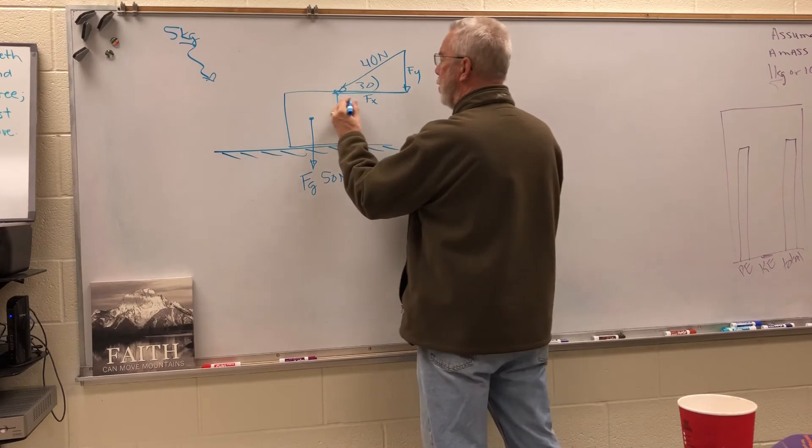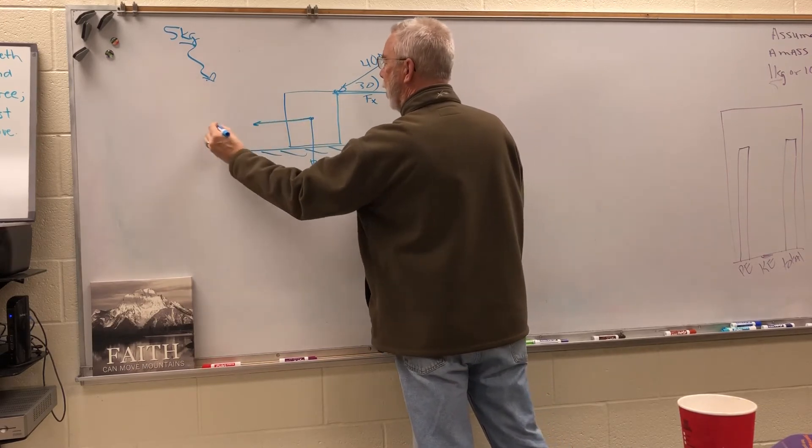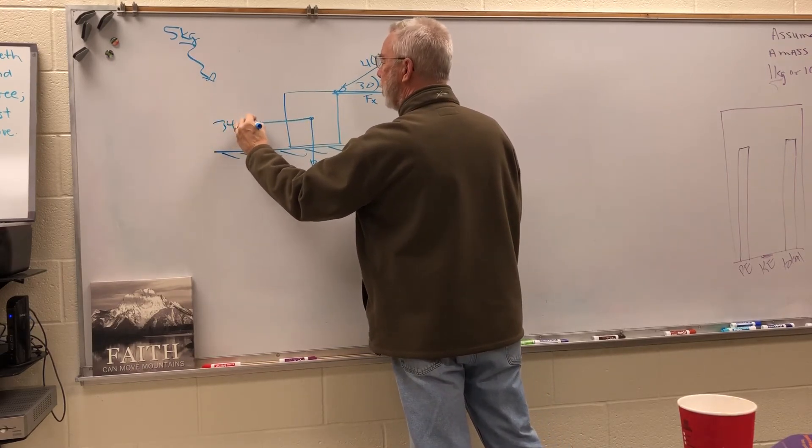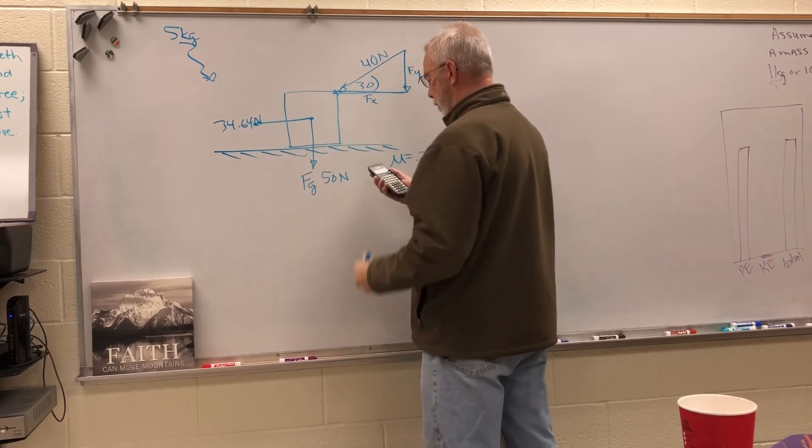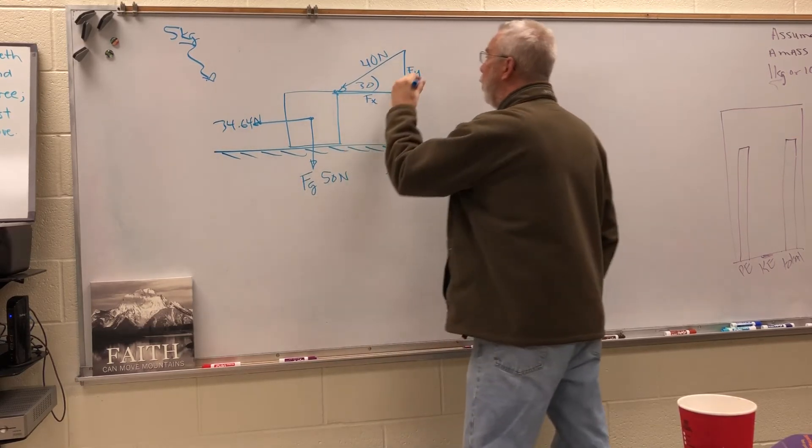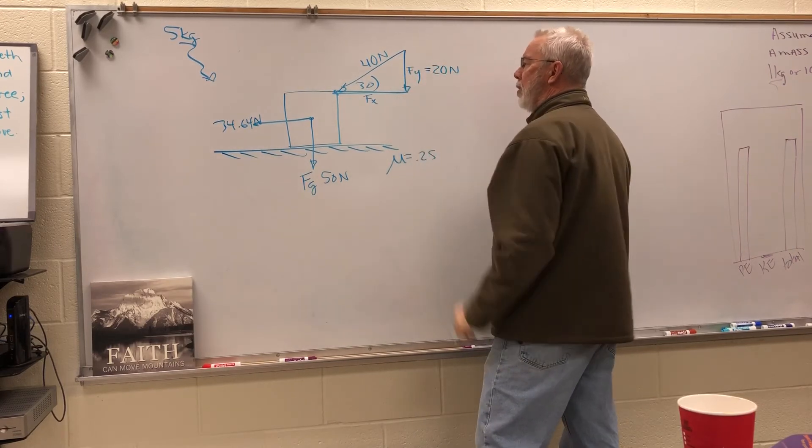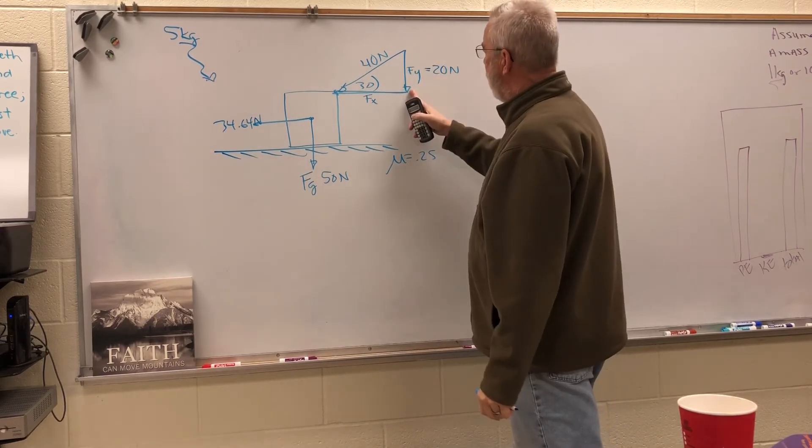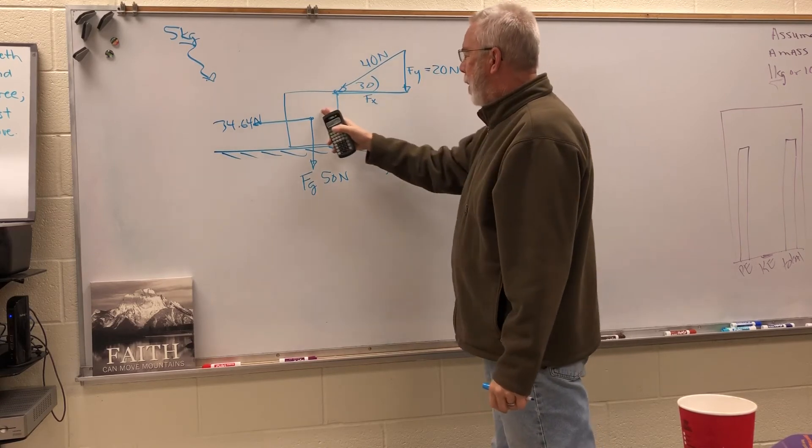The first thing we need is F of x and F of y. So we're going to do 40 at 30, and the F of x is going to the left like this, 34.64 newtons. And the F of y over here is 20 newtons.